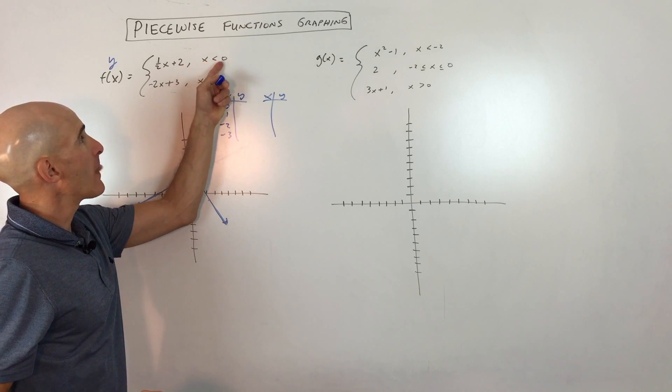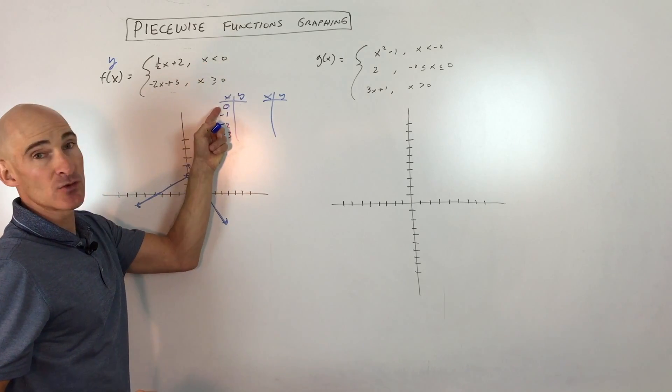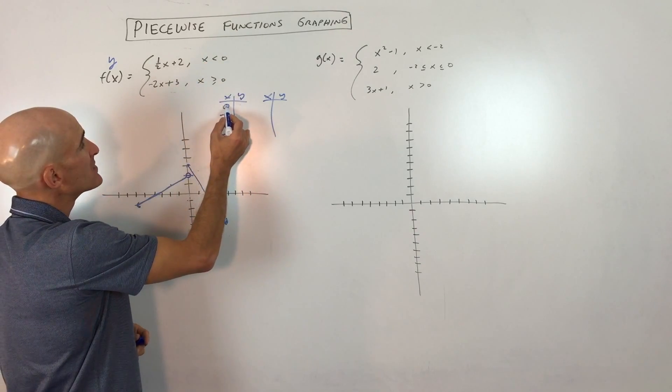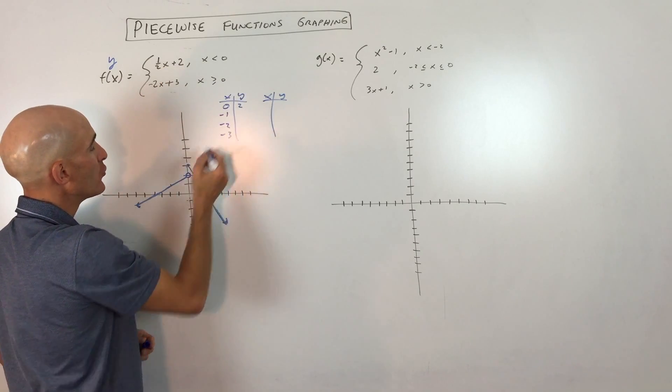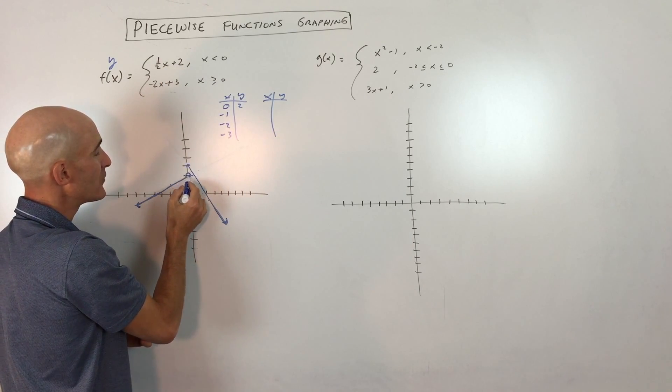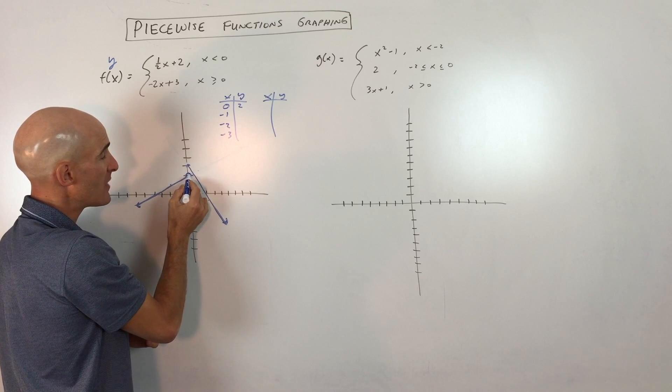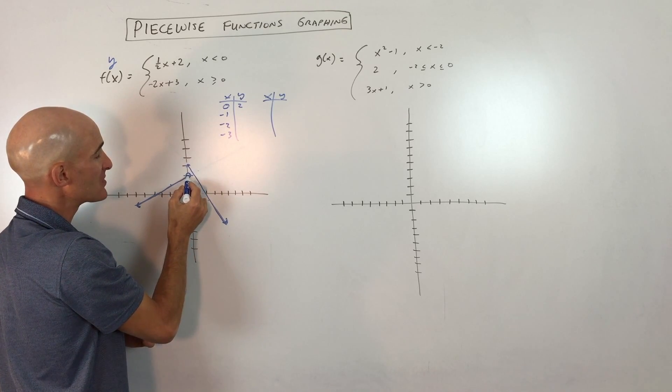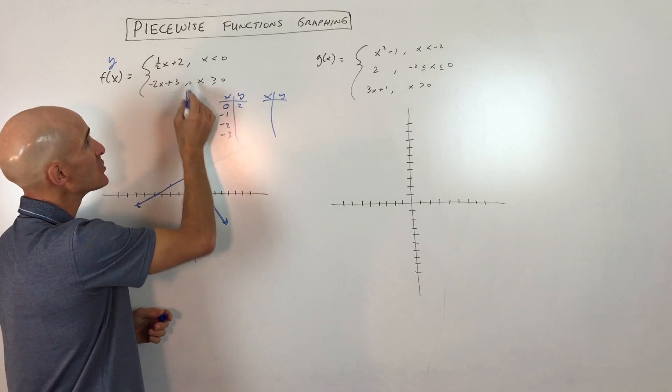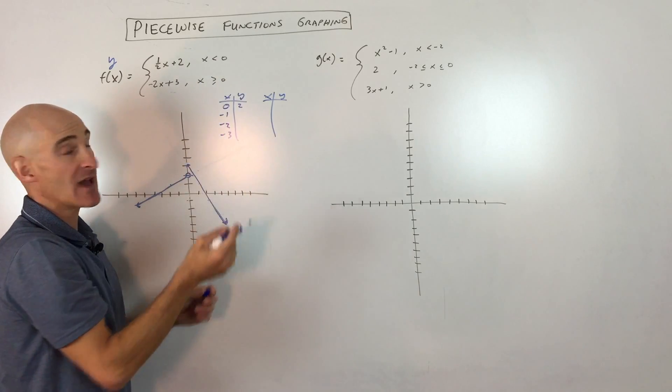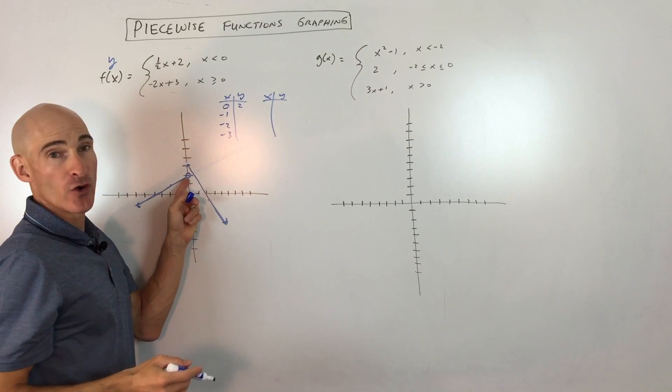Now you might say, wait a second, Mario, x is less than 0, not equal to 0. Well, you'll still want to put 0 in. You're going to get 2, but at (0, 2), instead of filling in that circle, like a solid circle, you're going to make that open. So it's going all the way up to this point, but not including. So you want to use that point even though it's less than, but not equal to, but just make sure you make it open.